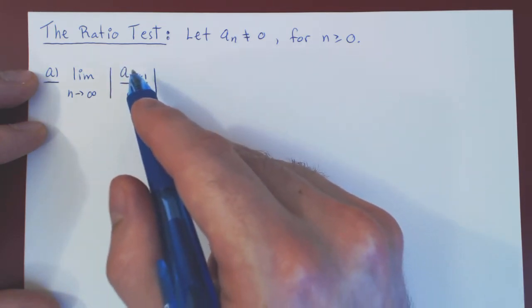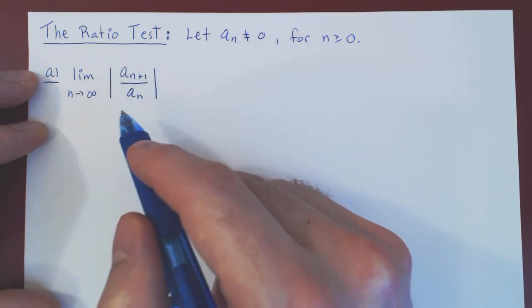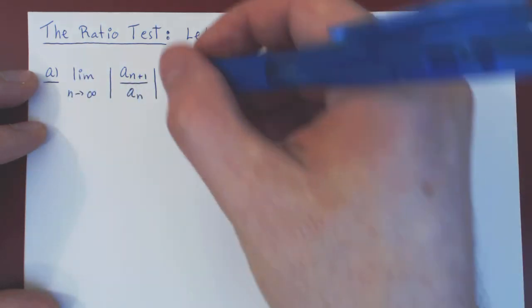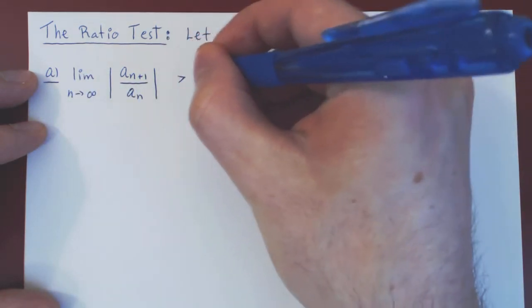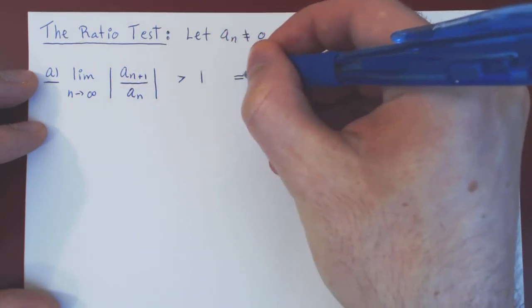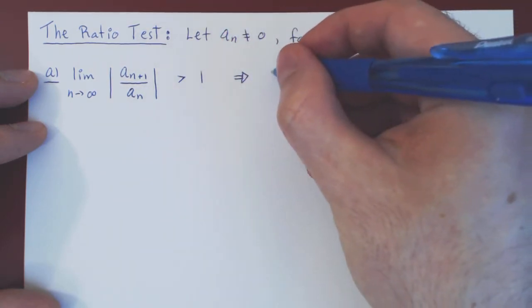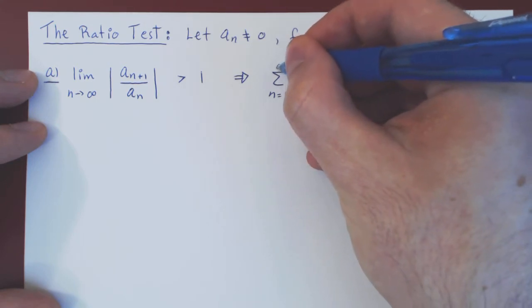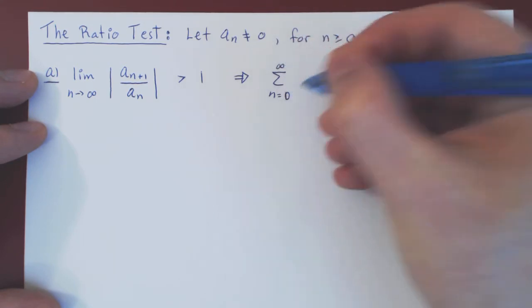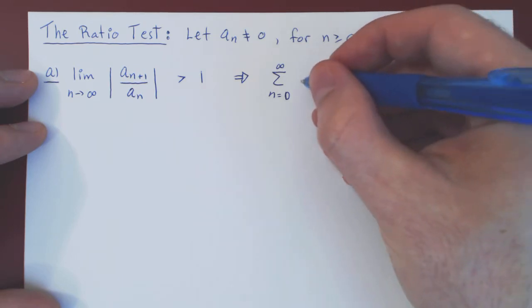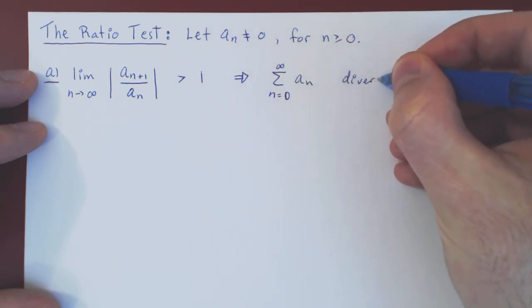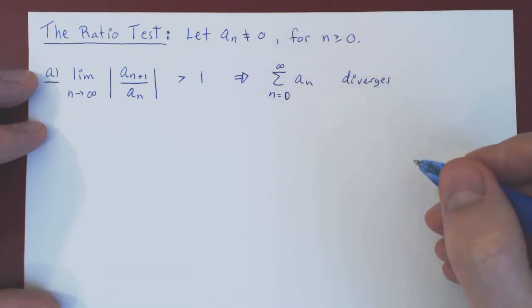an+1 is the term coming after an, so think of this as the ratio of consecutive terms of the sequence in absolute value. If this limit is strictly larger than 1, the implication is that the series Σan from n=0 to infinity diverges. It's that simple.